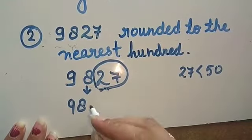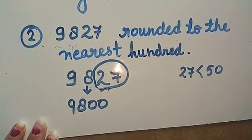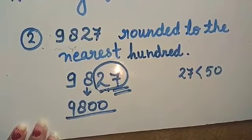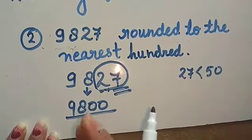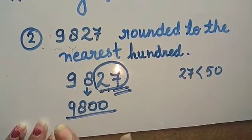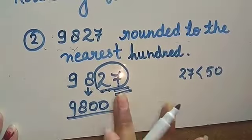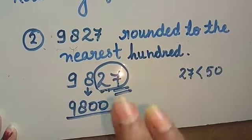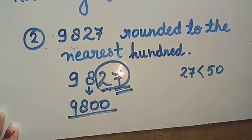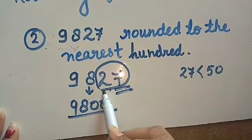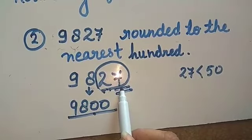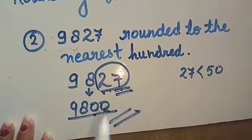The hundreds digit stays as it is. In the tens place, we write 0, and in the ones place, we write 0. So if the number to the right is less than 50, the hundreds place digit does not change and we write 0 in both the tens and ones places. That gives us our answer: 9800.